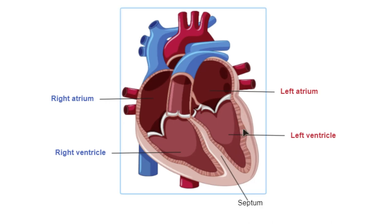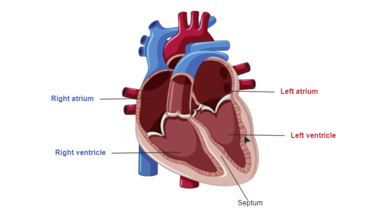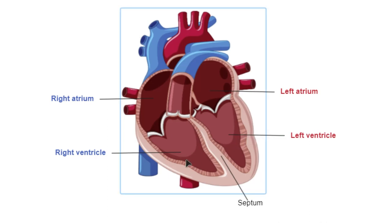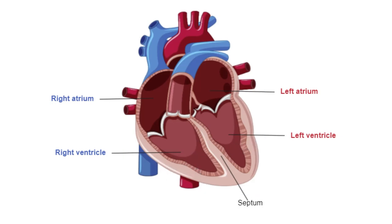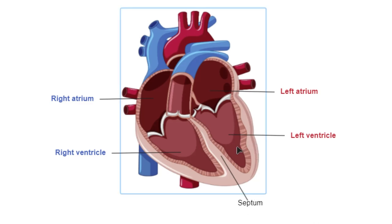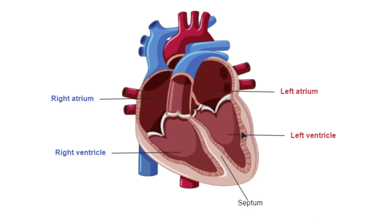Another thing to notice is that the wall on the left-hand side is actually a lot thicker than the right ventricle wall, although this diagram is not making that very clear. But when you're looking at a diagram, another way to tell is that this side will be a lot thicker, and that has something to do with the direction of the blood flow, which we'll talk about briefly later on.